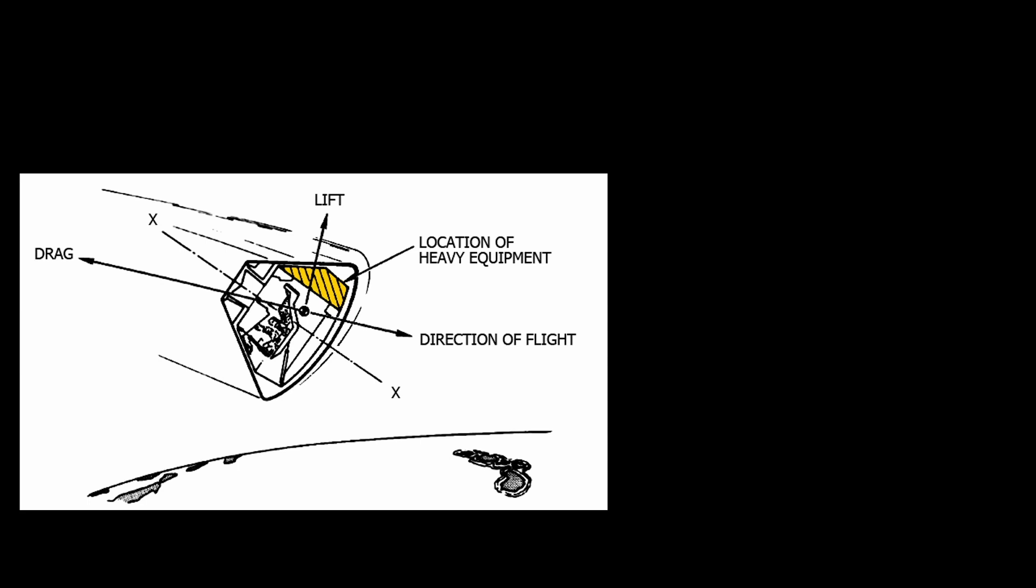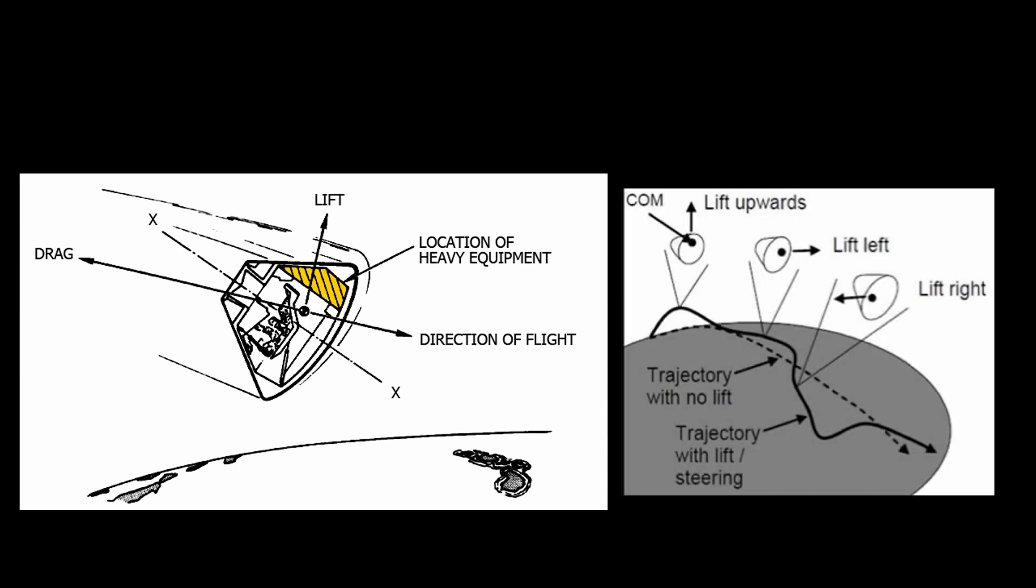That tilts the heat shield to the side, and that tilt generates lift. That lift can be used to control the path of the capsule by rotating the capsule around with its thrusters.